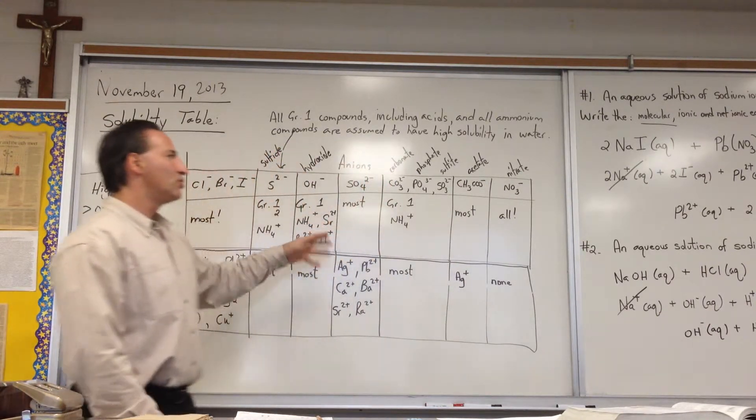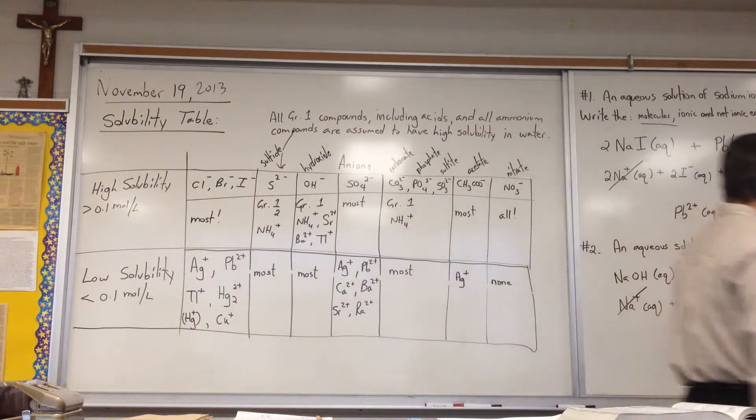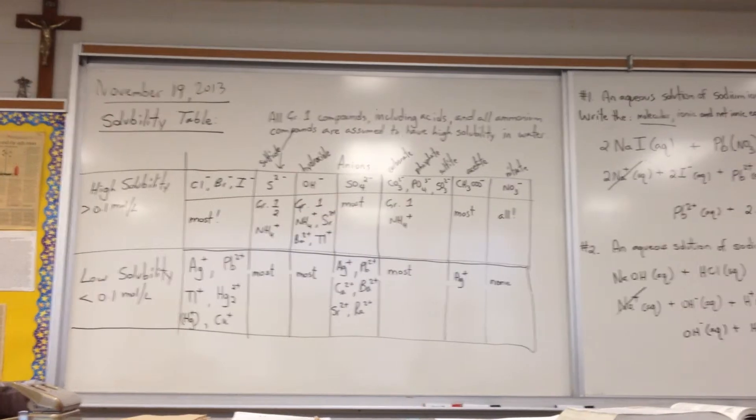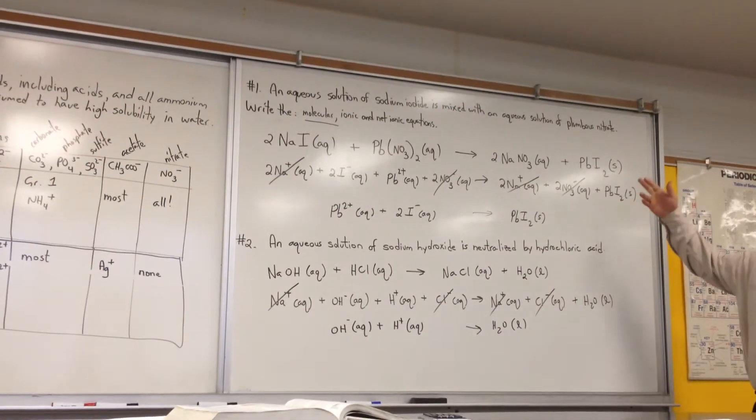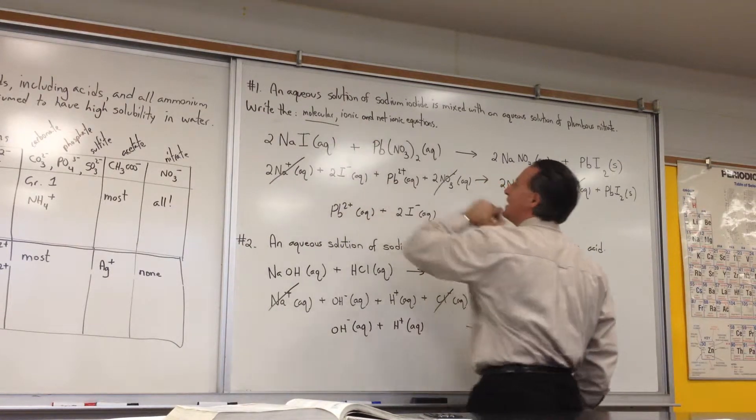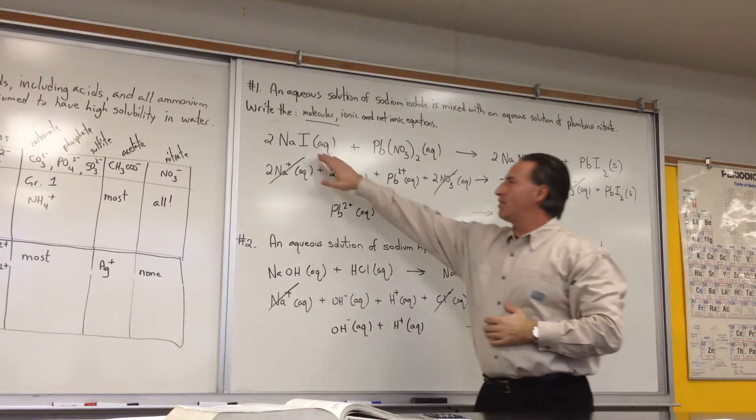So with this table, you should be able to predict the outcome of some reactions. Normally, when you describe a reaction, you would do it one of three different ways. There is a molecular, ionic, and net ionic equation. The molecular equation is where you show everything together.